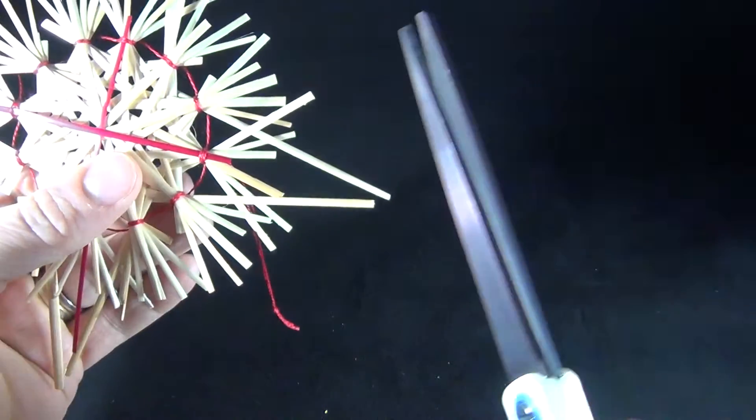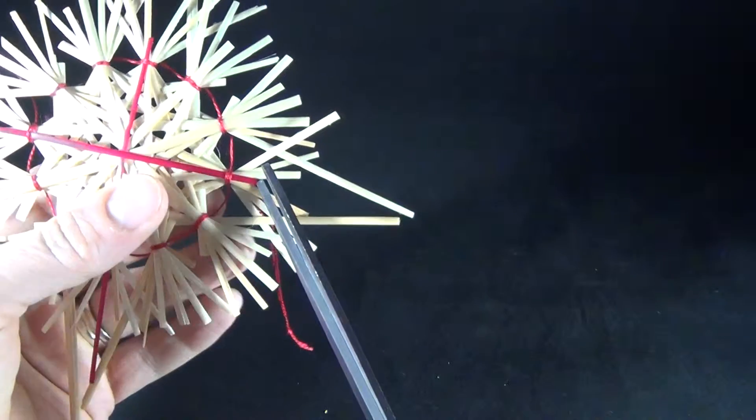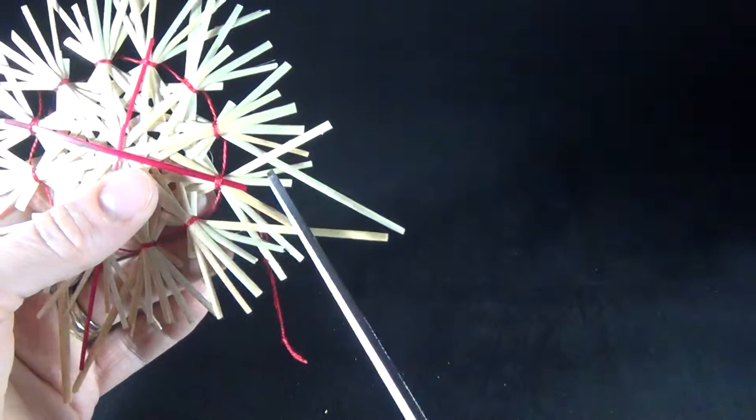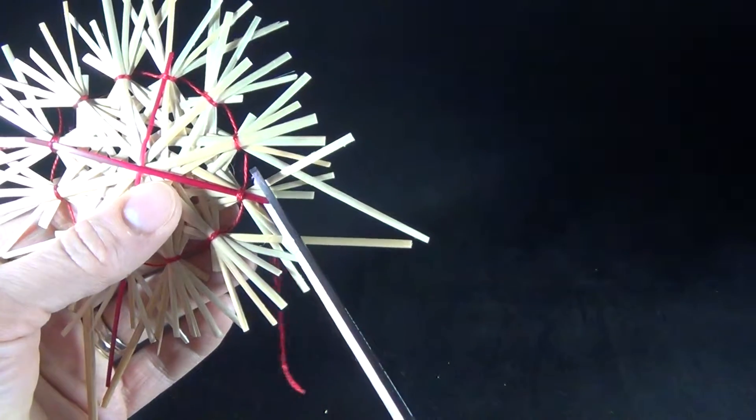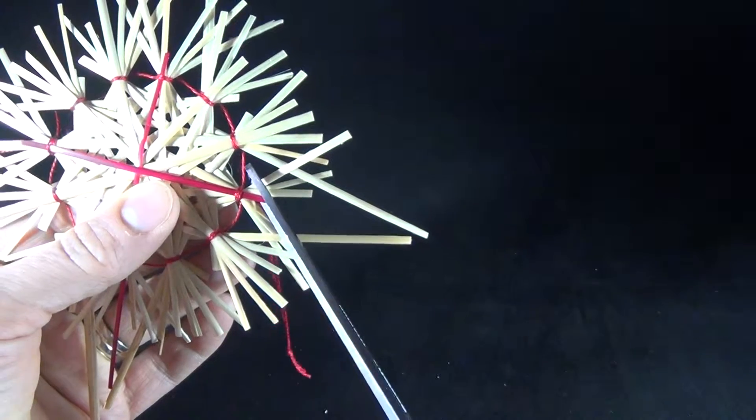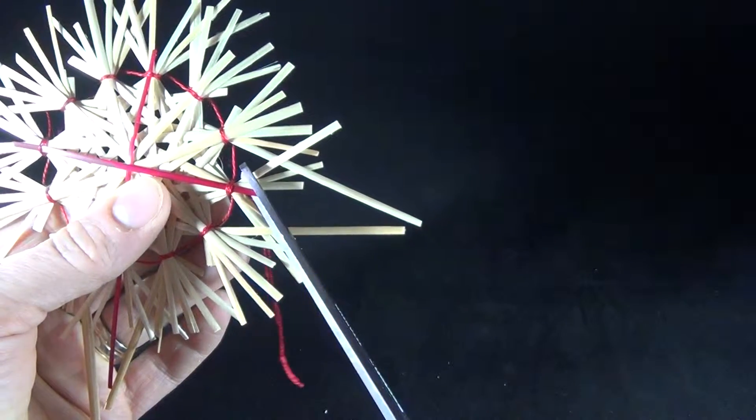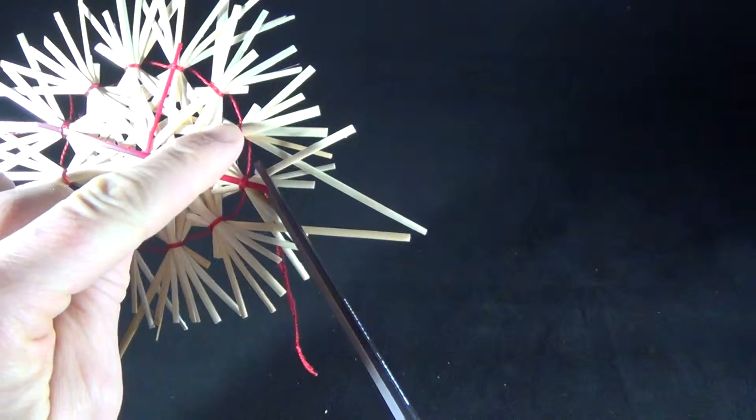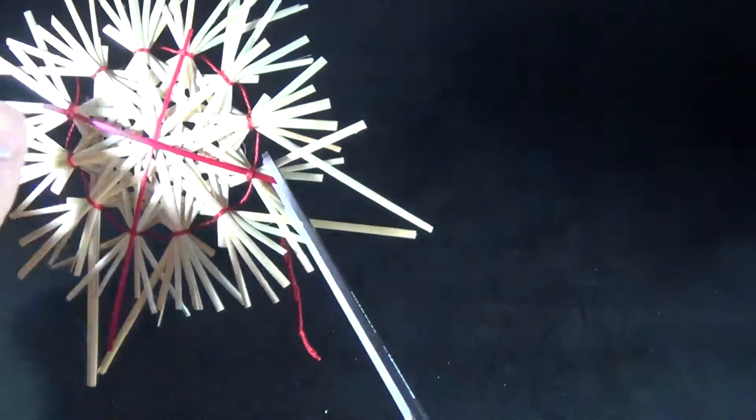With your scissors, you're going to go in here and point them starting at the red, pointing to the adjacent knot at an angle.